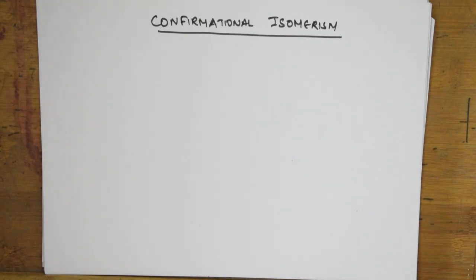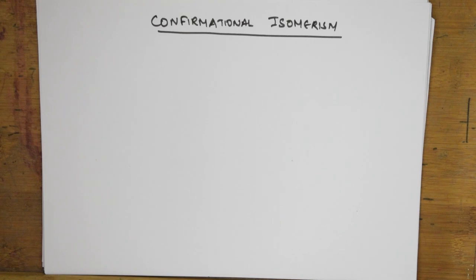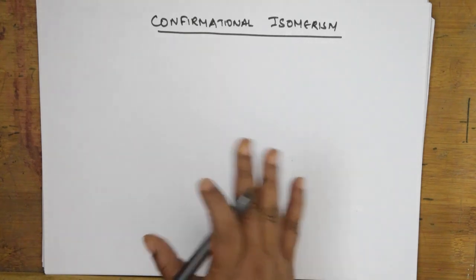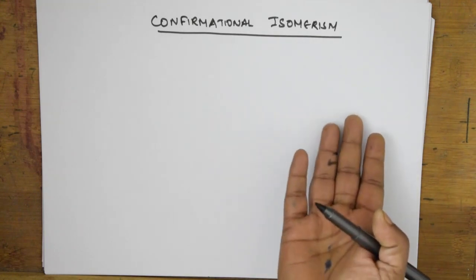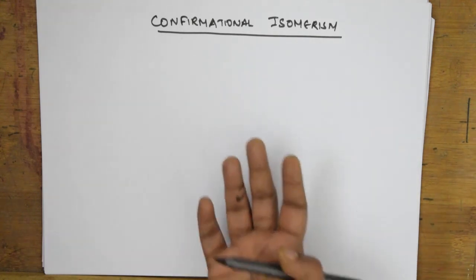Welcome to one more session of general organic chemistry. I've taught different types of isomerisms — structural isomerism including chain, positional, functional, metamerism, tautomerism — and stereo isomerism including optical isomerism: optical activity, specific rotation, enantiomers, diastereomers, D-L nomenclature, and R-S nomenclature. Now we come to the last type of isomerism: conformational isomerism.